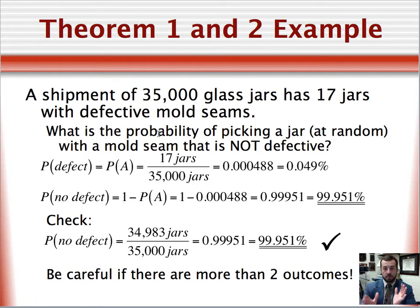Okay, so let's check your answer. First of all, the probability of having a defective jar would simply be 17 divided by 35,000, 0.049%. To calculate the probability of not having a defective jar, all we need to do is subtract 1 minus this value, and we get 99.951%. To double-check our answer, all that we have to do is subtract 17 from 35,000, 34,983, divide that by 35,000, and we get 99.951%. But, we need to be careful if there are more than two outcomes, and this brings us to some more probability theorems.